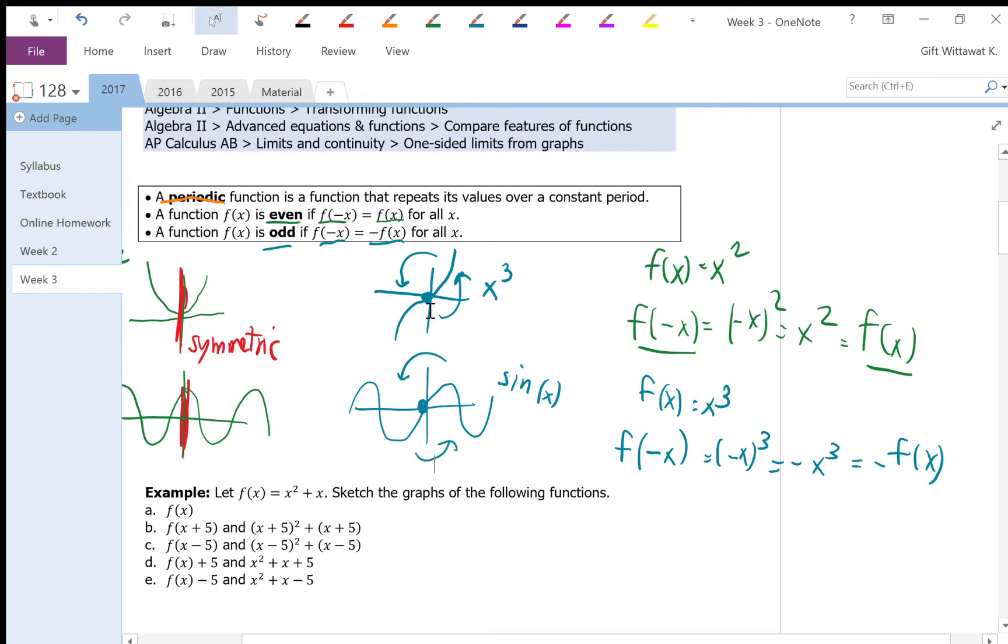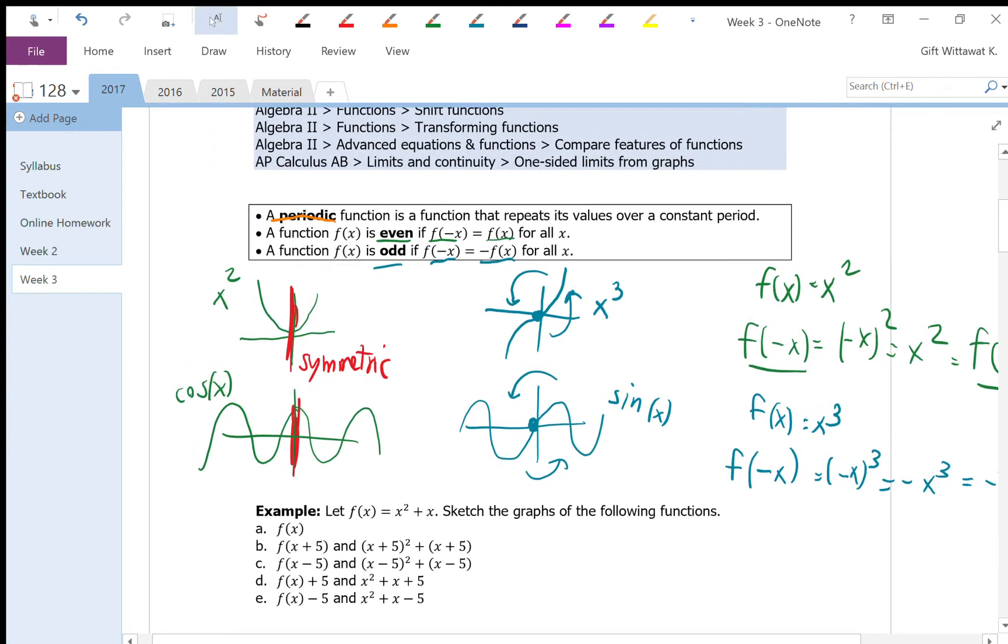So x cubed, if you were to rotate this guy 180 degrees, you will get the same graph. If you were to rotate this guy 180 degrees, you will get the same graph. So x cubed and sine of x are an example of an odd function.